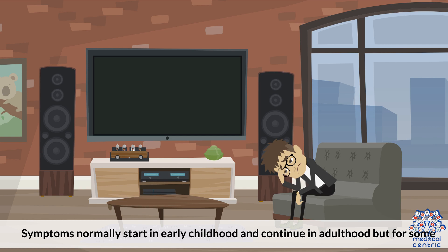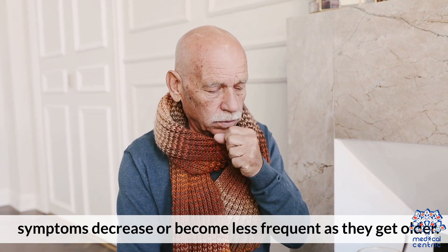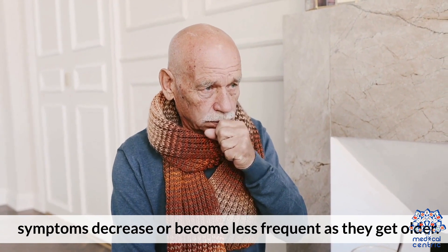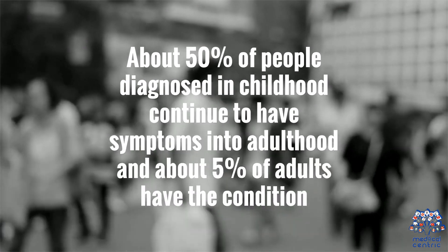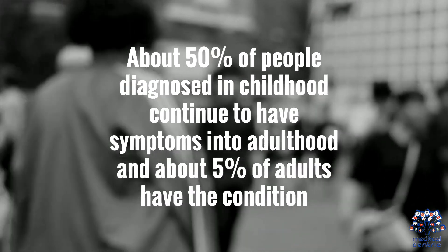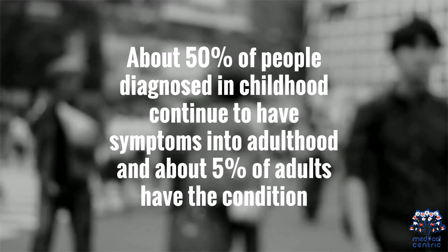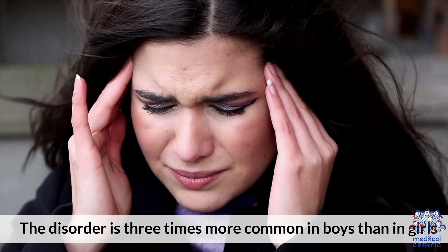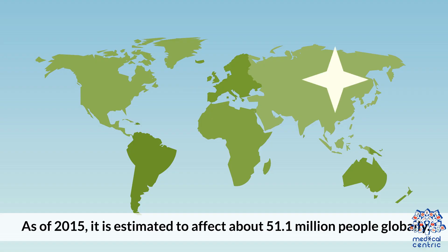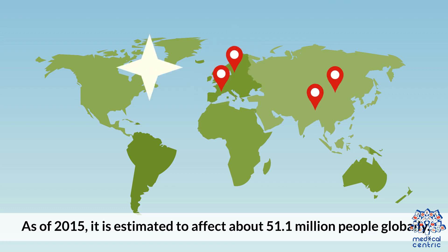Symptoms normally start in early childhood and continue into adulthood, but for some, symptoms decrease or become less frequent as they get older. About 50% of people diagnosed in childhood continue to have symptoms into adulthood, and about 5% of adults have the condition. The disorder is three times more common in boys than in girls. As of 2015, it is estimated to affect about 51.1 million people globally.